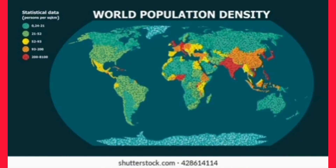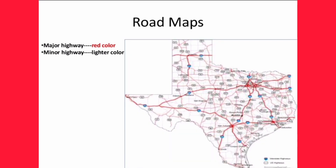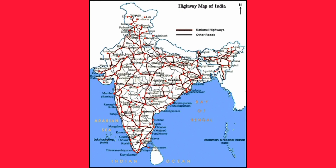Next we are going to discuss about roadways. A roadways map is a network connecting different places across the world. Major highways are indicated by red color, while minor highways are indicated by a lighter color.